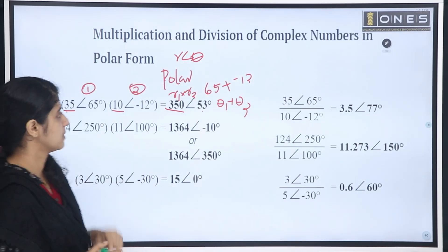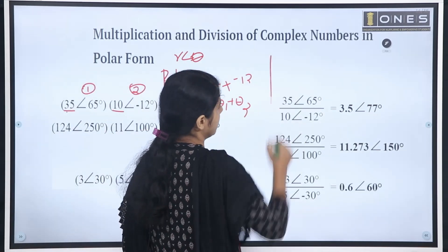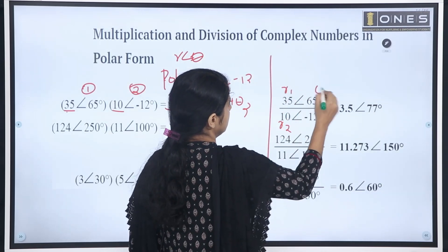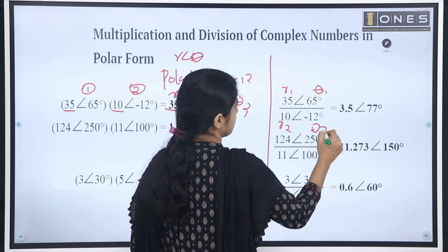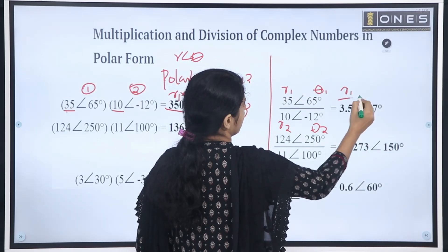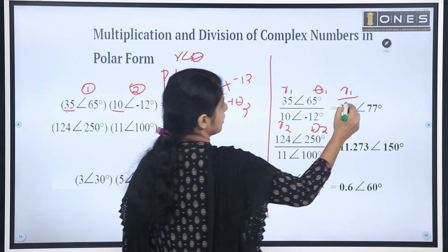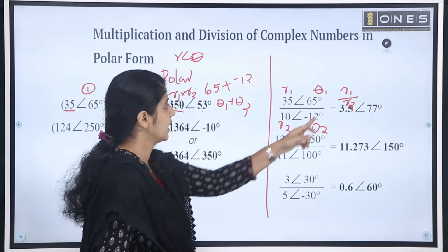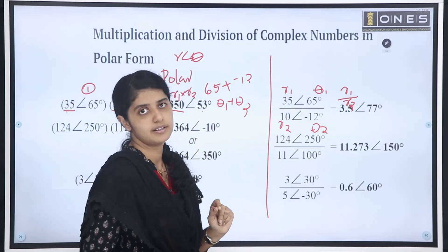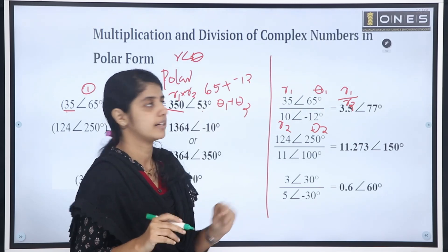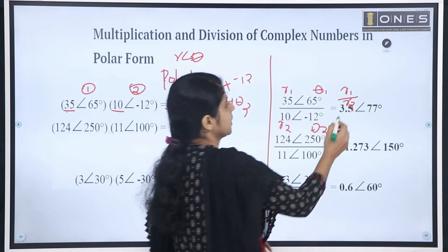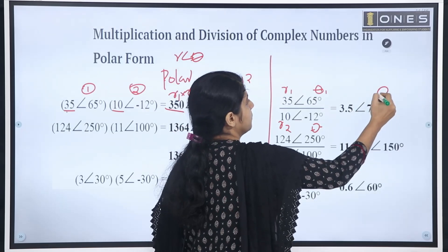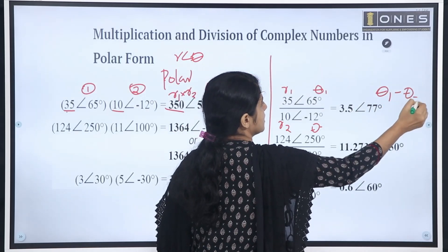For division: divide r1 by r2 and subtract angles — theta1 minus theta2. Example: 35 angle 65 divided by 10 angle minus 12. The magnitude is 35 divided by 10 equals 3.5. The angle is 65 minus (minus 12) equals 77. So the result is 3.5 angle 77.